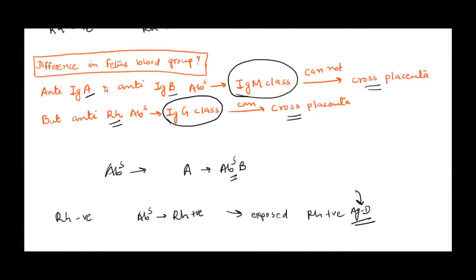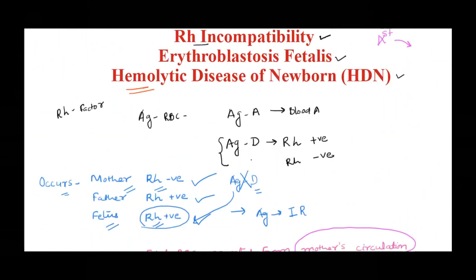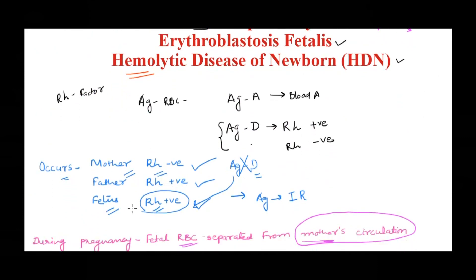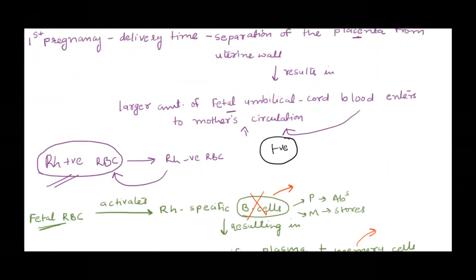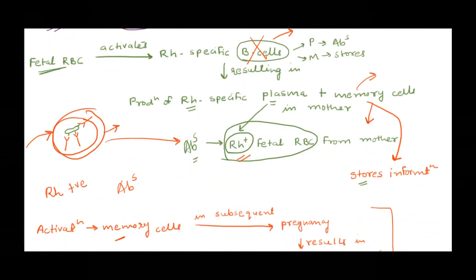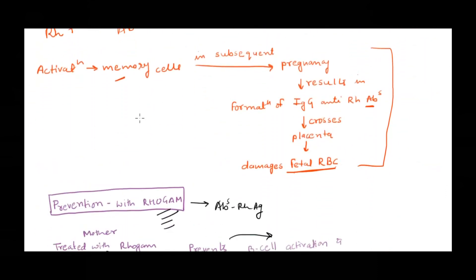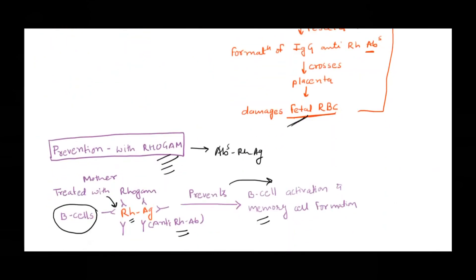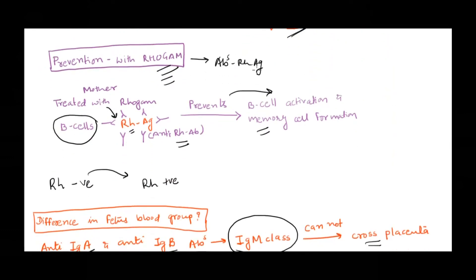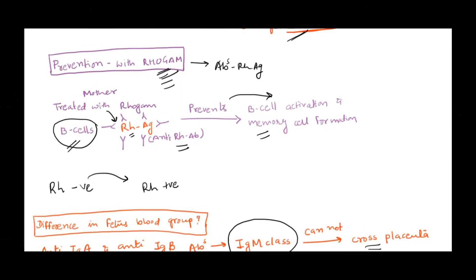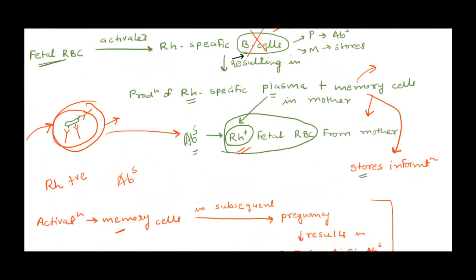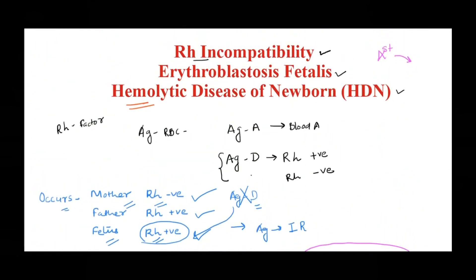So that's all about RH incompatibility. It occurs when the mother is RH negative and the fetus is RH positive. During the first pregnancy there is no problem because fetal RBCs enter the mother's circulation only at delivery, activating B cells that produce plasma and memory cells. In subsequent deliveries, antibodies can cross the placenta and damage fetal RBCs. To prevent this, the brilliant mechanism of providing ready-made antibodies — RhoGAM — before the antigen can activate the mother's B cells keeps subsequent pregnancies safe. Hope this video was helpful. Do subscribe to the channel for new videos every week!